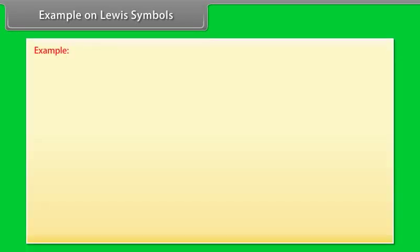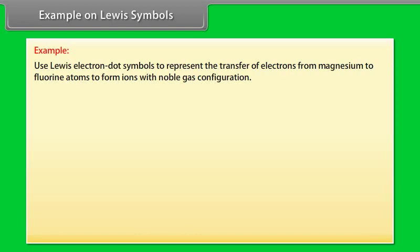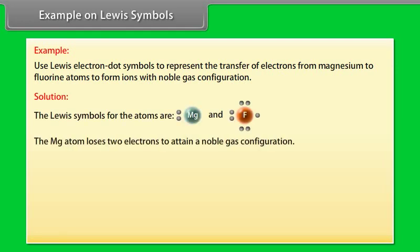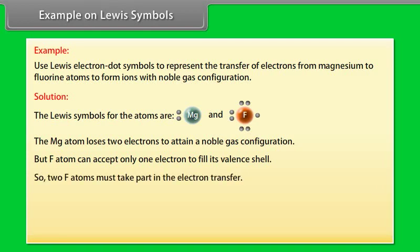Example on Lewis symbols: Use Lewis electron dot symbols to represent the transfer of electrons from magnesium to fluorine atoms to form ions with noble gas configuration. The Mg atom loses 2 electrons to attain a noble gas configuration, but each F atom can accept only 1 electron to fill its valency shell. So 2 F atoms must take part in the electron transfer.